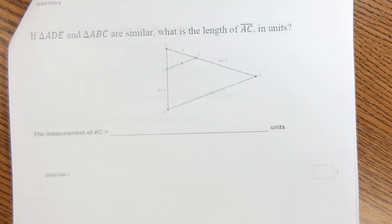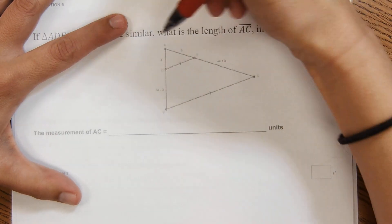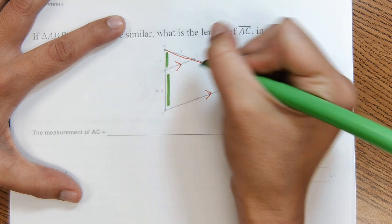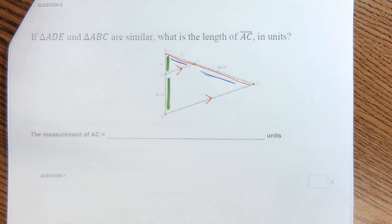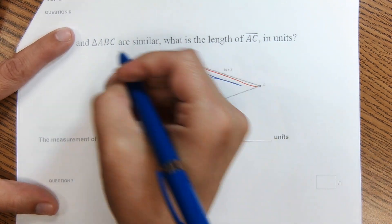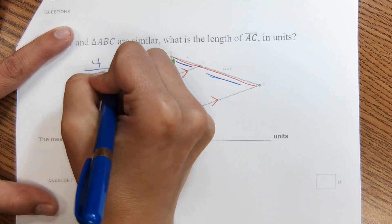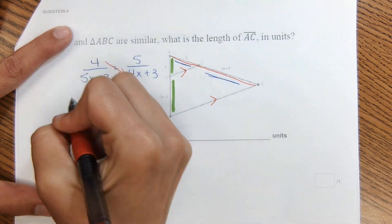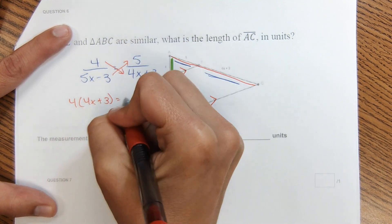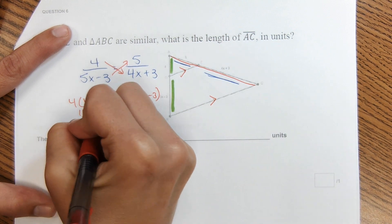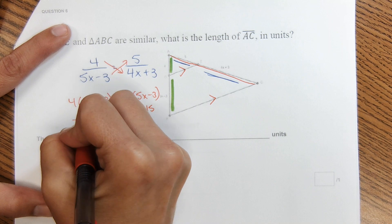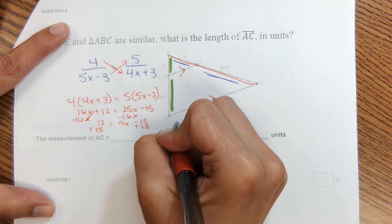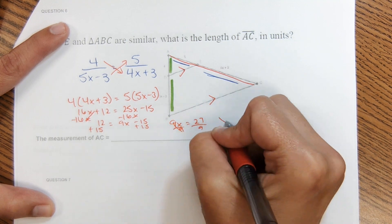Okay, it says triangle ABE and ABC are similar. What are the lengths of AC in units? So we're looking for the length of this. It also shows that this is parallel to this. And when that happens, this segment corresponds to this in the same ratio that this corresponds to this. So we're going to set up a proportion to solve for x to begin with. So I'm going to do 4 over 5x minus 3 equals 5 over 4x plus 3. And then use cross multiplication to solve. So 4 times 4x plus 3 equals 5 times 5x minus 3. And I'm just going to continue solving here. 12 equals 9x. 9x equals 27. So x equals 3.